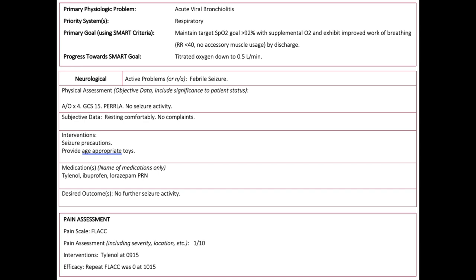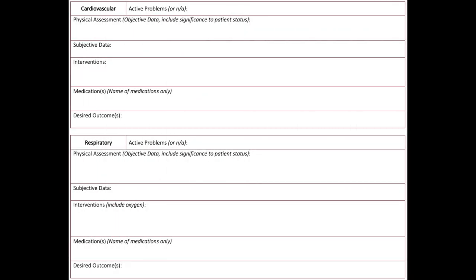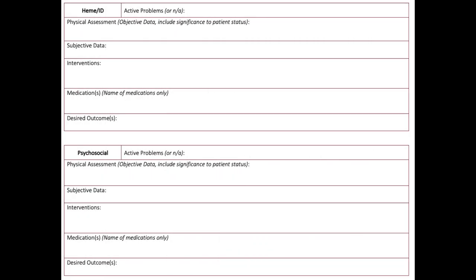You will complete one section each for neurological, cardiovascular and respiratory, gastrointestinal and genitourinary, hematology, infectious disease, and psychosocial.